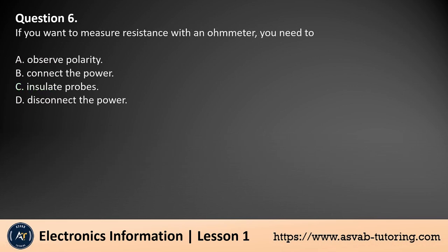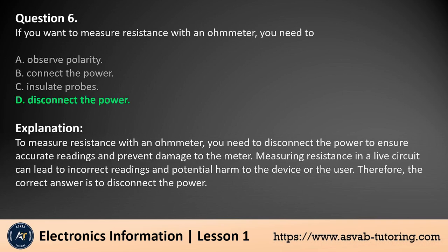Question 6. If you want to measure resistance with an ohmmeter, you need to: a. Observe polarity, b. Connect the power, c. Insulate probes, d. Disconnect the power. The answer is d. To measure resistance with an ohmmeter, you need to disconnect the power to ensure accurate readings and prevent damage to the meter. Measuring resistance in a live circuit can lead to incorrect readings and potential harm to the device or the user.